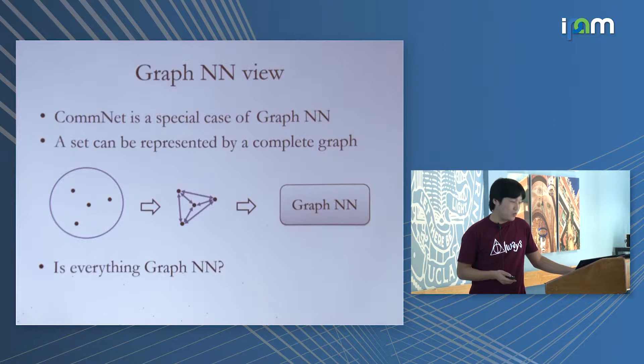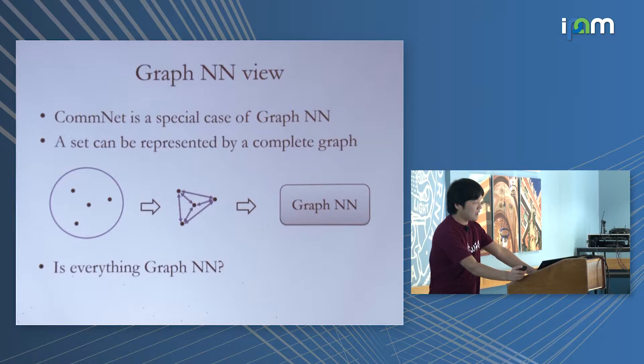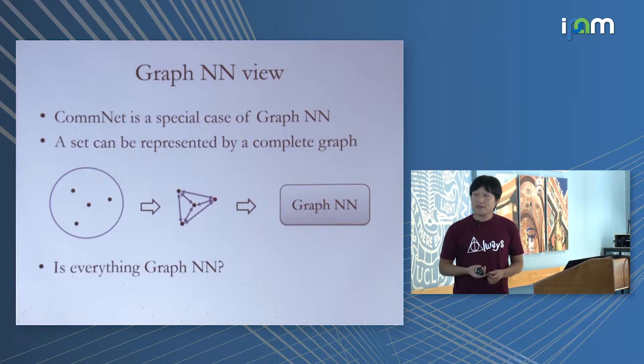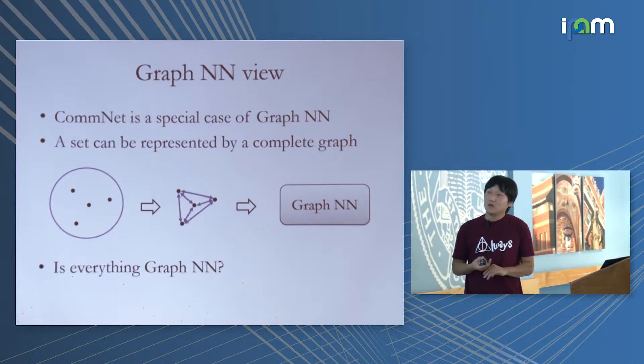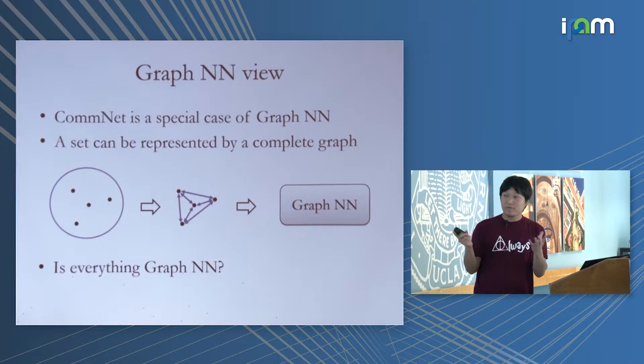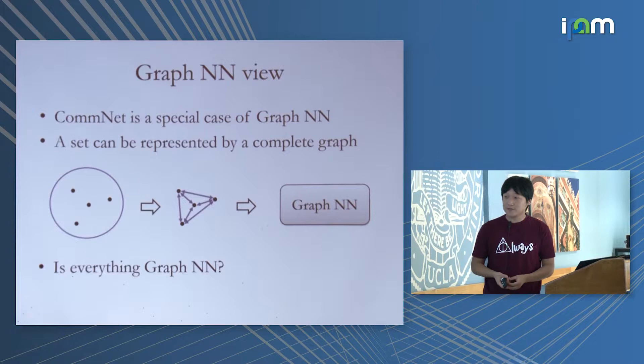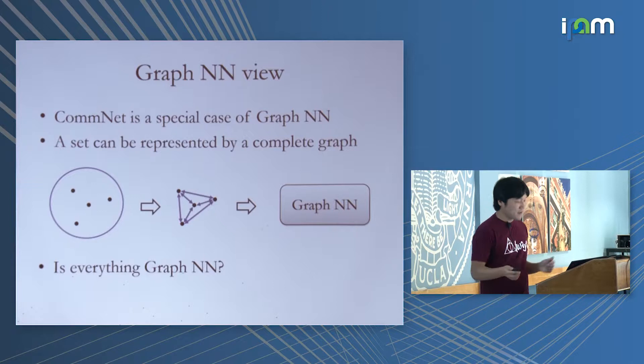Looking more closely, we found out there's actually something called a graph neural network, and our model is just a graph neural network — a bit disappointing to find out. What's happening is: a set doesn't look like a graph, but if you connect the elements and make a complete graph, you're just feeding that complete graph to a graph neural network. But maybe everything is a graph neural network anyway, so why worry about it.